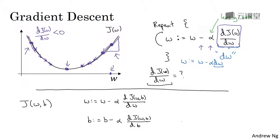As an aside, I just want to mention one notational convention in calculus that is a bit confusing to some people. I don't think it's super important that you understand calculus, but in case you see this, I want to make sure that you don't think too much of this, which is that in calculus, this term here, we actually write as follows with that funny squiggle symbol. So this symbol, this is actually just a lowercase d in a fancy font, in a stylized font.